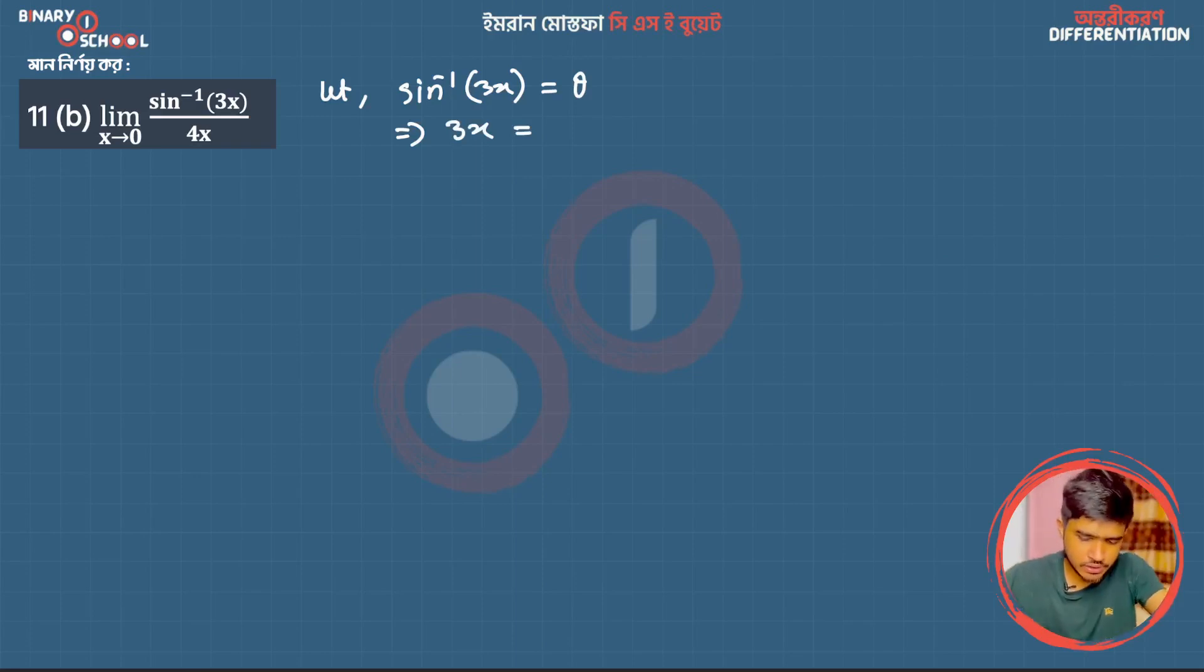If x equals sin theta, then 3x equals 3 sin theta. From this, x equals theta by 3.